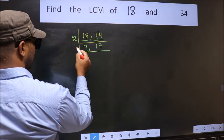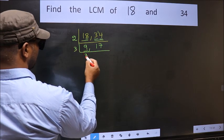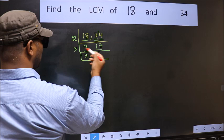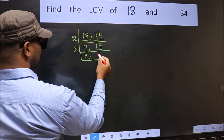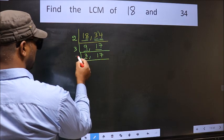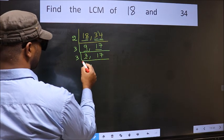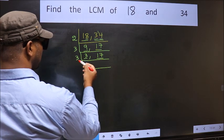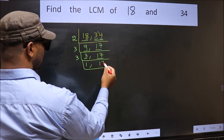Now here we have 9. 9 is 3, 3 is 9. The other number 17, not divisible by 3. So we write it down as it is. Now here we have 3, 3 is a prime number. So 3 ones, 3. The other number 17, not divisible by 3. So we write it down as it is.